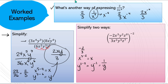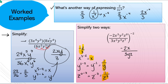For z: 0 minus 7 from the denominator gives z to the negative 7, which I can rewrite as 1 over z⁷. Taking all these pieces and smashing them back together: negative 2 on top, 3 on the bottom, x on top, y on the bottom, and z⁷ on the bottom.